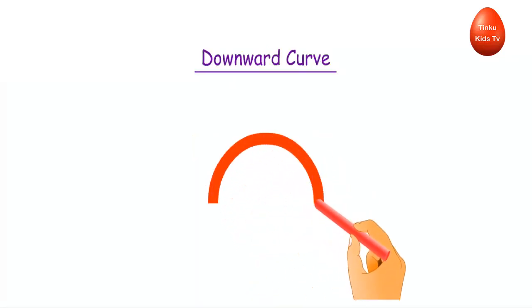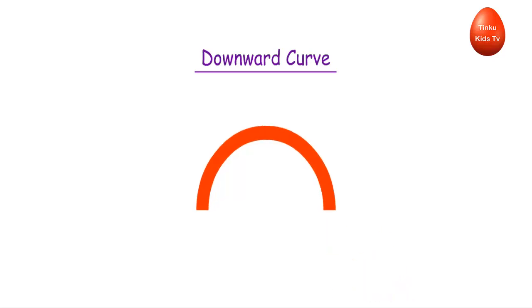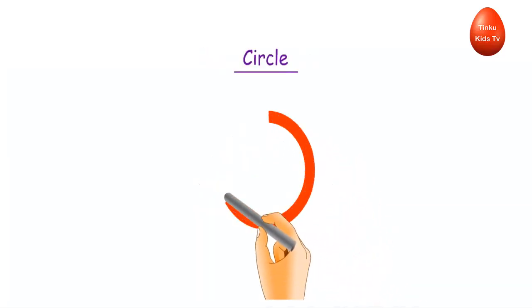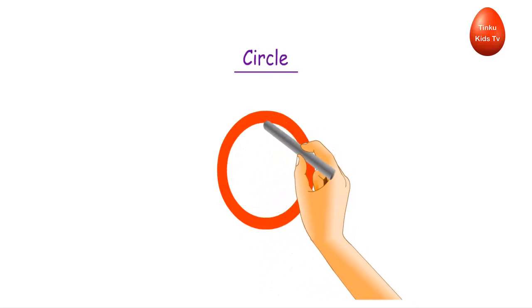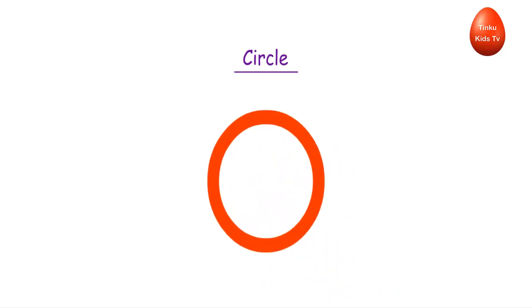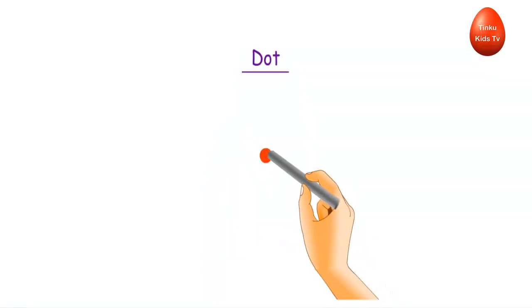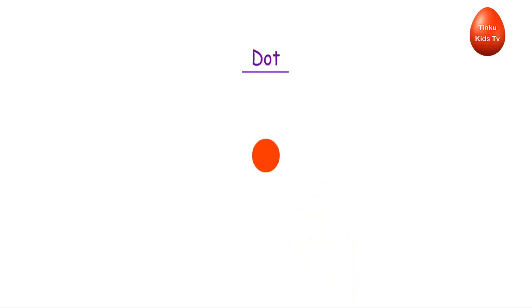Downward curve — this is a downward curve. Circle — this is a circle. Dot — this is a dot.